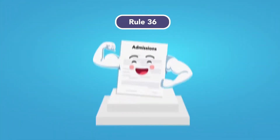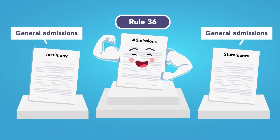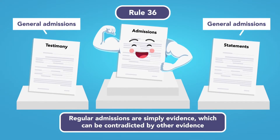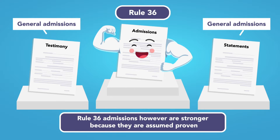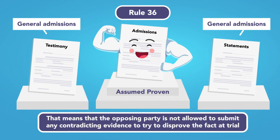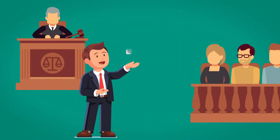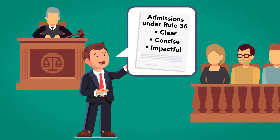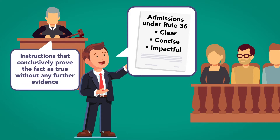Admissions under Rule 36 are also stronger evidence than general admissions, testimony, or statements by a party admitting a fact. Regular admissions are simply evidence, which can be contradicted by other evidence. Rule 36 admissions, however, are stronger because they are assumed to be proven. That means the opposing party is not allowed to submit any contradicting evidence to try to disprove the fact at trial. Admissions under Rule 36 may be read to the jury at trial and are accompanied by instructions from the judge that they are conclusively proven as true without any further evidence.